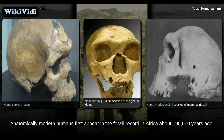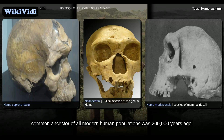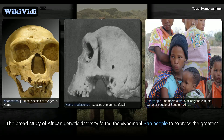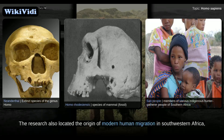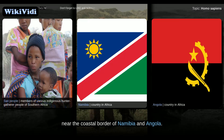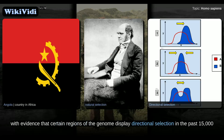Anatomically modern humans first appear in the fossil record in Africa about 195,000 years ago, and studies of molecular biology give evidence that the approximate time of divergence from the common ancestor of all modern human populations was 200,000 years ago. A broad study of African genetic diversity found the Khoisan people to express the greatest genetic diversity among the 113 distinct populations sampled, making them one of 14 ancestral population clusters. The research also located the origin of modern human migration in southwestern Africa, near the coastal border of Namibia and Angola. The forces of natural selection have continued to operate on human populations, with evidence that certain regions of the genome display directional selection in the past 15,000 years.